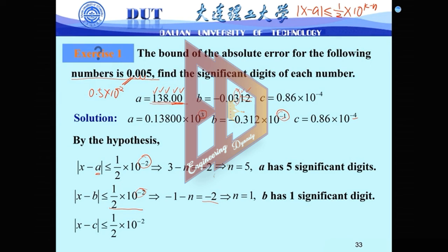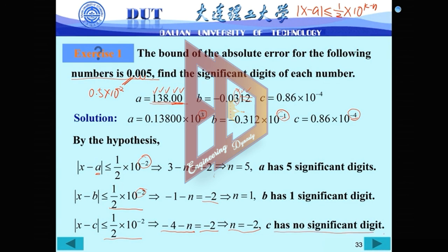So for last one. Again, the error band is same. So for here, the k is just minus 4. So again, you should write minus 4 minus n equal to minus 2. What is n? N is a negative number, it is negative 2. What is mean? N should be positive number. So it means C has no significant digit. Has no significant digit. That means totally wrong. 8 and 6 are wrong, totally wrong.